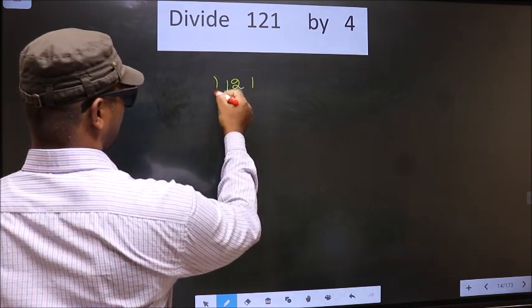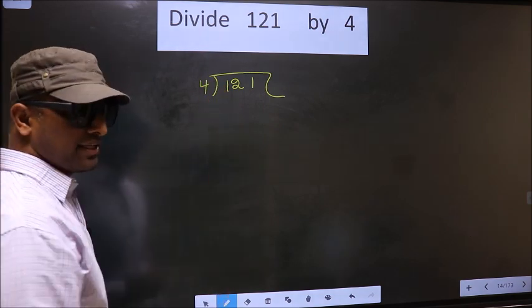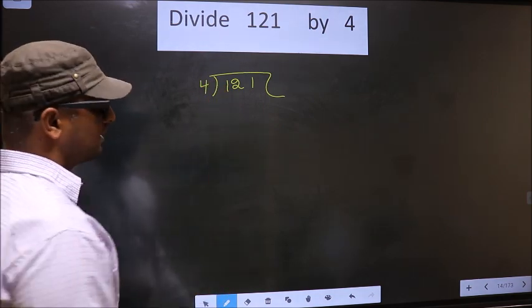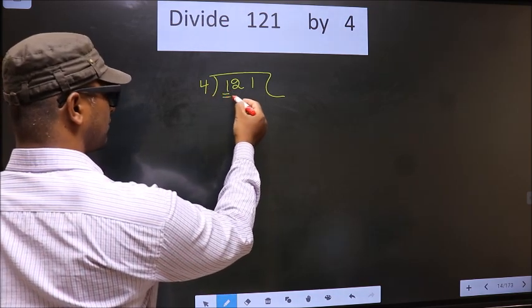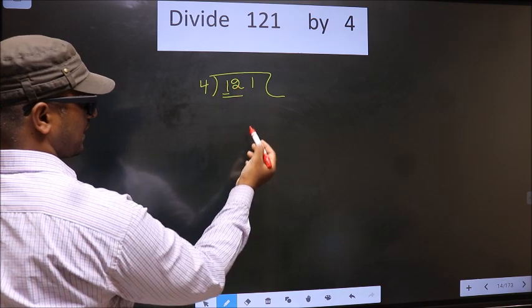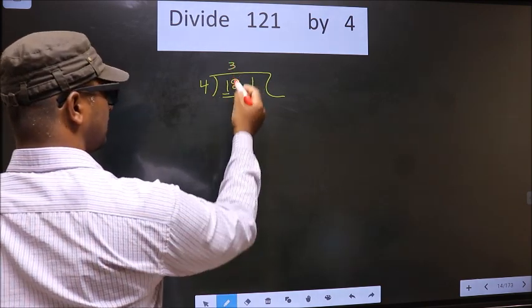That is 121, 4. Now here we have 1, 1 smaller than 4. So we should take two numbers, that is 12. When do we get 12 in the 4 table? 4 times 3 is 12.